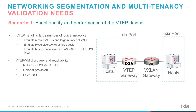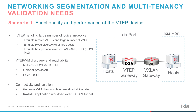The discovery and reachability of VMs in both multicast and unicast provisions is another important aspect of validation. While testing the overlay network, the network engineer must ensure proper connectivity and isolation by running realistic application workloads over the VXLAN tunnels. Please watch our product demo videos to learn more about the IX Network VXLAN validation solution.